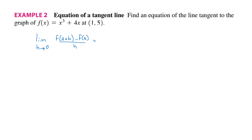For f of a, a here is 1 from the point, and f of a is equal to 5, which is f of 1. We still have to find f of a plus h, which in this case is f of 1 plus h. Substitute in your equation each single x by 1 plus h.